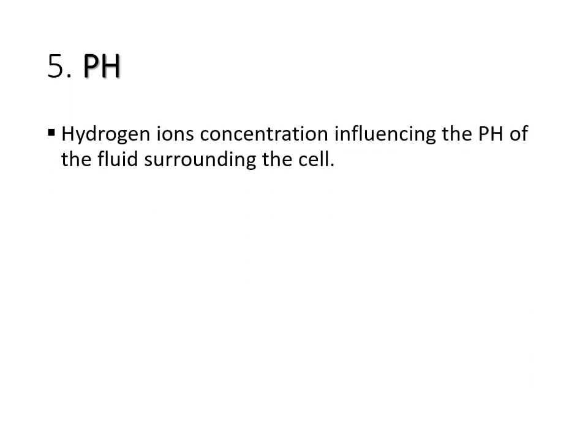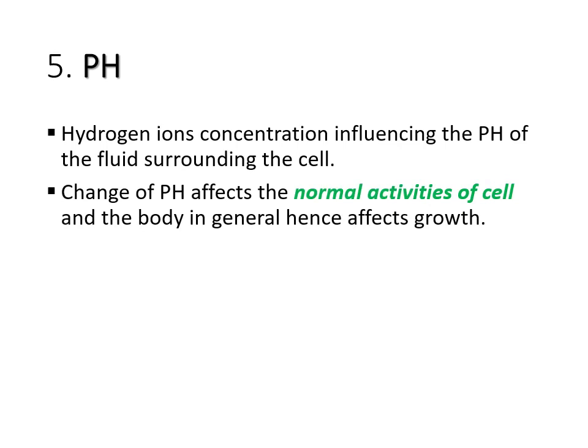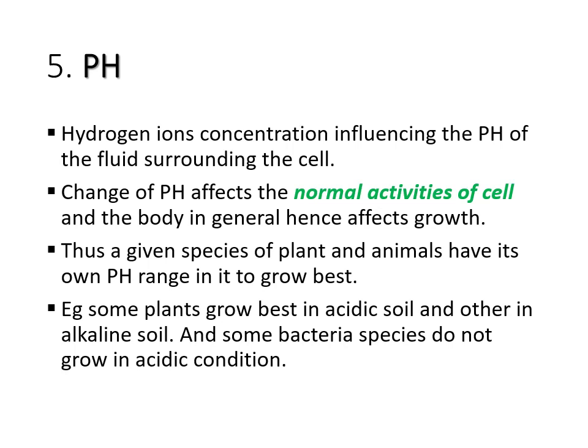The last external factor is pH. As we know, pH is determined by the hydrogen ion concentration. When we talk about pH, we are referring to the pH surrounding the cell. Many metabolic activities within the cell are affected by the pH of the environment because the enzymes that catalyze those metabolic activities have a narrow range of pH at which they work best. So a change in pH affects the normal activity of a cell, and hence affects the growth of the body.